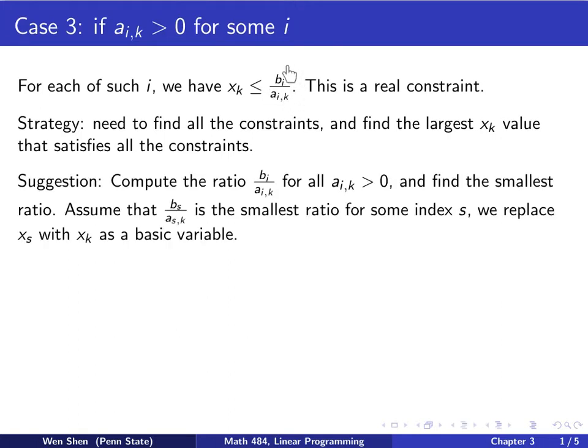Since the constraint is represented by this ratio, we have the following suggestion. We will compute this ratio b_i over a_i,k for all the indexes i such that a_i,k is strictly bigger than zero. You might have only one of them, or you might have several. And then you're going to find the one that has the smallest value. Among these positive ratios, you find the one that's the smallest. Let's say s is that index such that b_s over a_s,k is the smallest ratio among all those that you checked. And if that is the case, we will replace x_s with x_k as a basic variable.